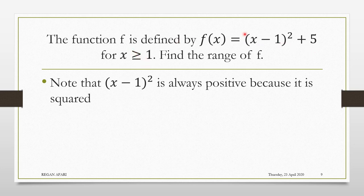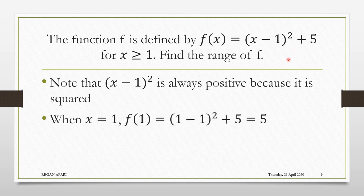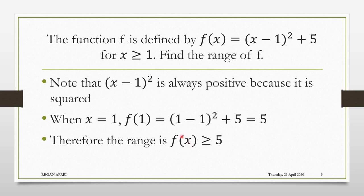In all cases, the minimum number I can get is 5. So don't waste your time — as soon as you see a function in this completed square form, the range can be stated as f of x is greater than or equal to 5, because that is the minimum value you will get.